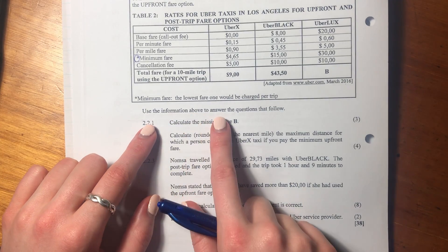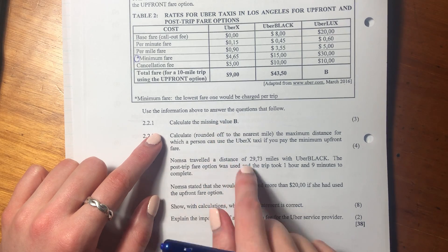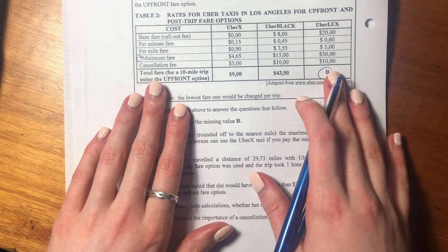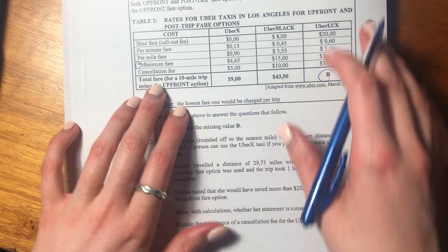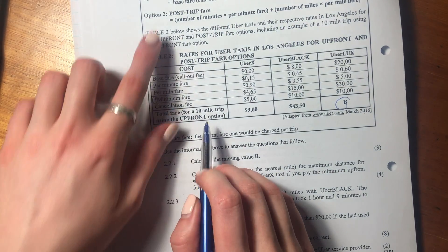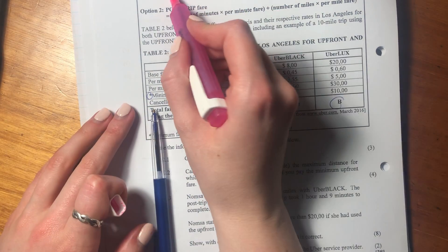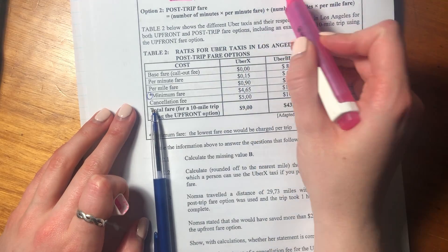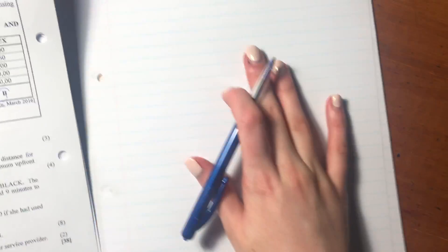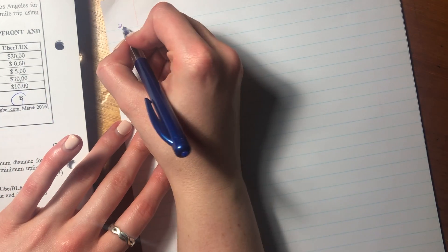So it says use the information above to answer the questions that follow. Firstly, it says calculate the missing value B. So that's okay. It's an UberLux, not a problem. And we know that we're going to use the upfront option. So what we're going to need for the upfront option, let's highlight all the things we need to put in. We need to put the base fare, the number of miles, and the per mile fare. I'm just going to quickly label this correctly 2.2.1.